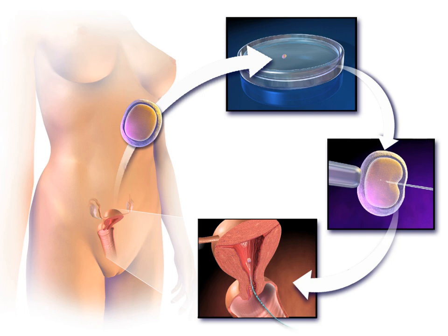Autologous endometrial co-culture is a possible treatment for patients who have failed previous IVF attempts or who have poor embryo quality. The patient's fertilized eggs are placed on top of a layer of cells from the patient's own uterine lining, creating a more natural environment for embryo development.